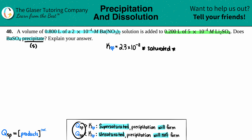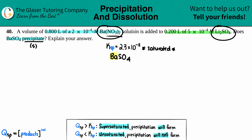We need to find out whether the molarity values they gave us will produce a Q greater than the Ksp. Since we're mixing two solutions, we want to find if BaSO₄ will precipitate. The barium Ba comes from Ba(NO₃)₂ and the SO₄ comes from Li₂SO₄ — these two compounds combine, which goes back to balancing equations from Gen Chem 1.